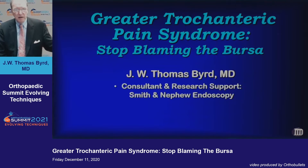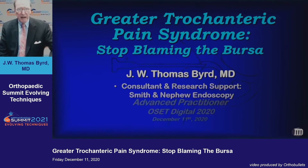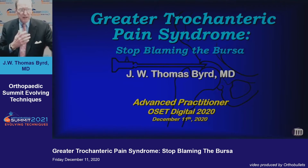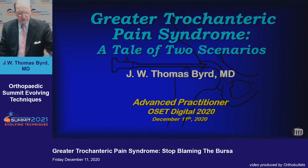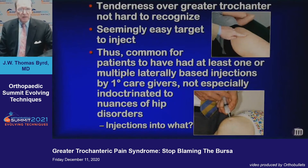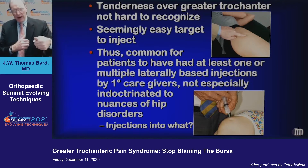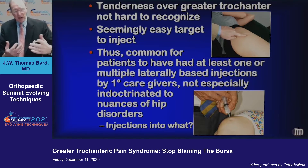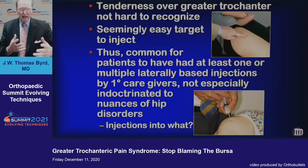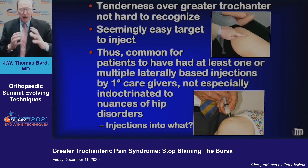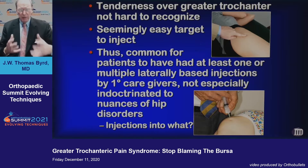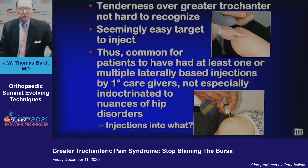My disclosures are available on the Academy website. Really, this is a tale of two scenarios. Most commonly, tenderness over the greater trochanter isn't very hard to recognize, and it's also a seemingly easy target to inject. So it's common that you'll see folks who have had at least one or sometimes even multiple laterally-based injections by their primary caregivers, who may not be well-versed in the nuances of these hip disorders, and when you get reports of these injections, you're kind of scratching your head on exactly what structures were injected.